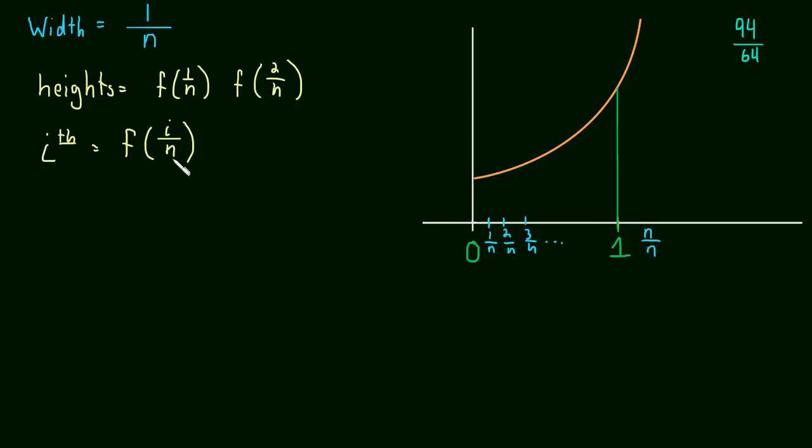So if you didn't watch the last video, quick recap. If you want the height of the first rectangle, you just plug 1 in for i, and you get 1 over n. If you want the height of the third rectangle, you plug in 3 for i, and you get f of 3 over n. That will give you the correct height for the third rectangle.